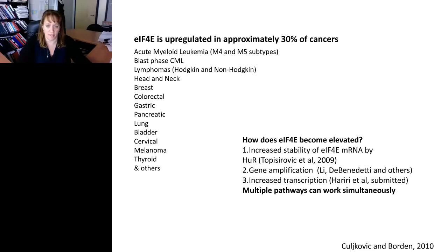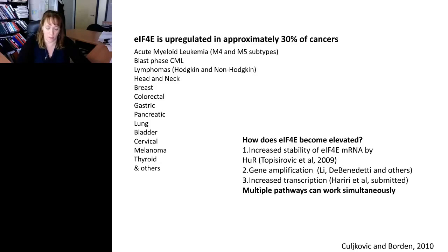Here is a short list of some of the cancers in which EIF4E has been shown to be upregulated. I am particularly going to focus today on acute myeloid leukemia, specifically the M4 and M5 subtypes — though our findings are also applicable to some other subtypes. A wide variety of hematological and solid malignancies are characterized by high 4E. Some, such as head and neck cancer, have about 99% penetrance of high EIF4E, whereas in others specific subgroups are high 4E.